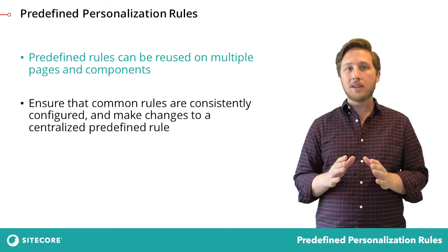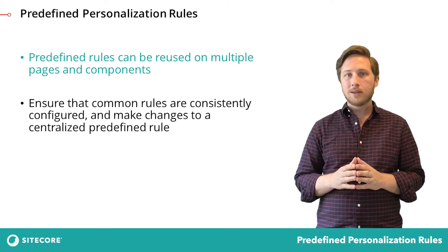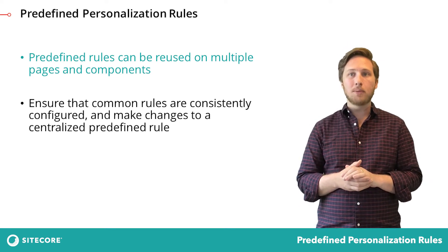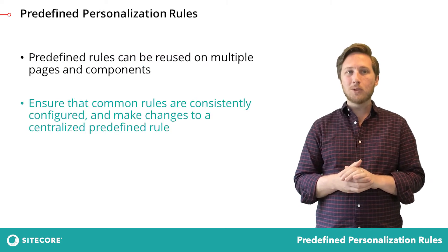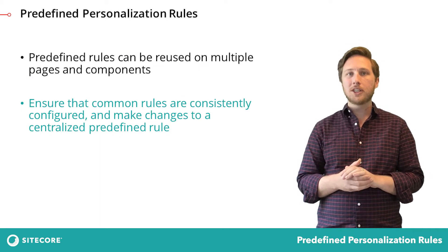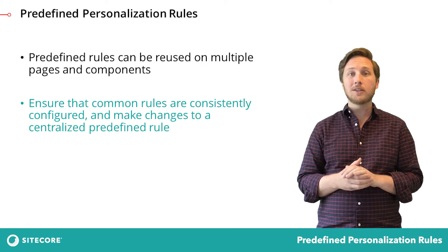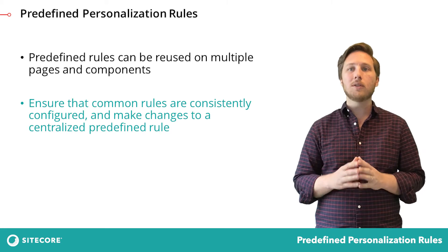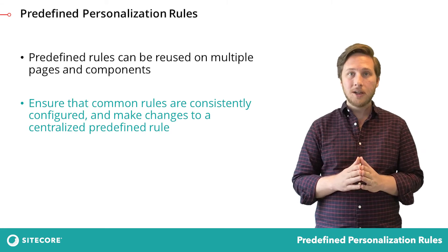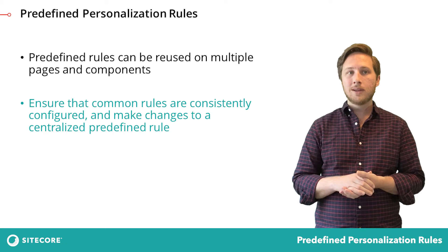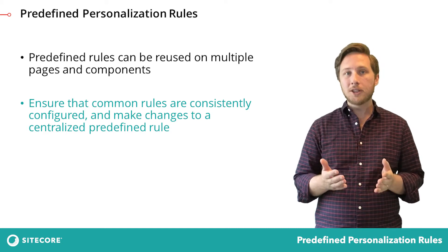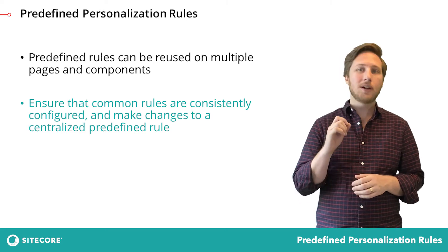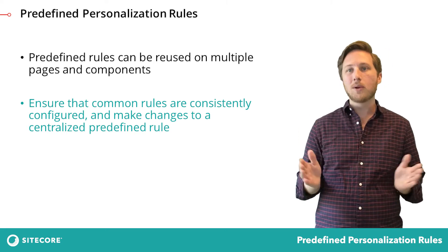Predefined rules are maintained in the marketing control panel. They appear at the top of the rules list whenever you're personalizing a component. A predefined rule ensures that your personalization conditions are consistently configured, but it also allows the flexibility to refine personalization strategy for the segments you're targeting. If business rules change and you need to modify a personalization condition, then you don't have to modify that rule across every component across your site.